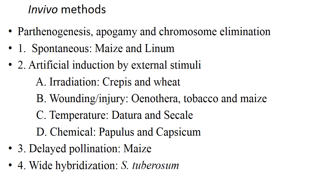I will just throw a light on delayed pollination in maize. Delayed pollination means pollination after 15 days of silk emergence. We cover the silk portion with a silk bag and after 15 days we go for pollination, which will give some extent of haploid production in the set seeds.